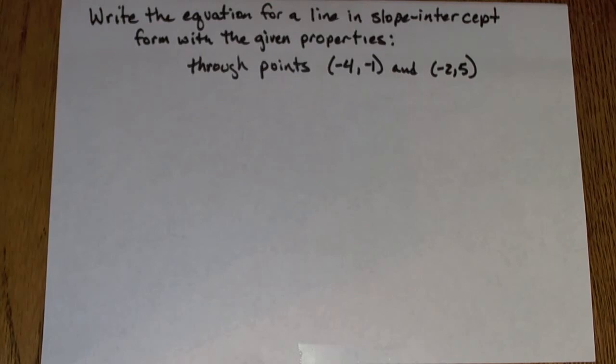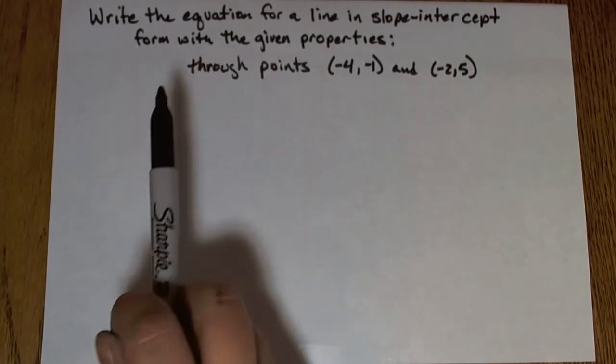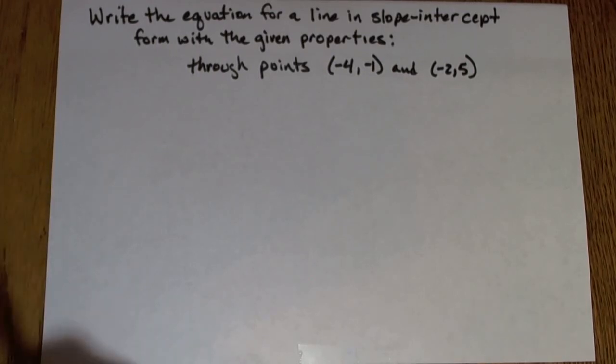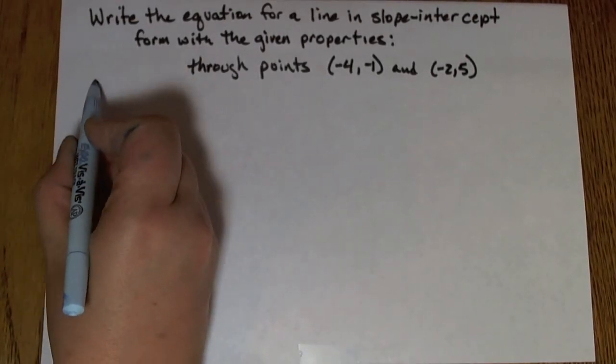When I look at this problem, I know that if I'm trying to write the equation for a line, I need to know the slope. And at this point I'm not given the slope. So the first step I'm going to do is find the slope of the equation that goes through those two points. So I'll be using the slope formula.